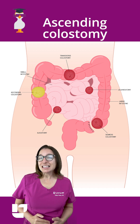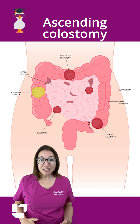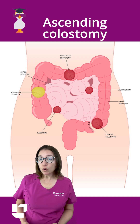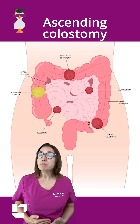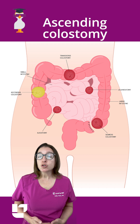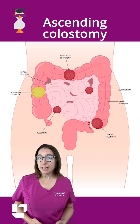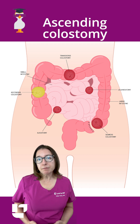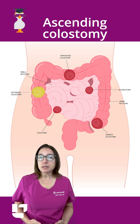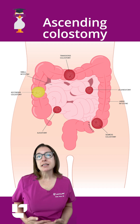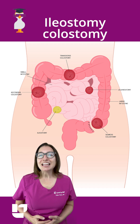An ascending colostomy is not done frequently, but when performed, it is made out of the ascending colon. The stoma will be located on the right side of the abdomen. Output from this type of colostomy will be loose, pasty, or watery.